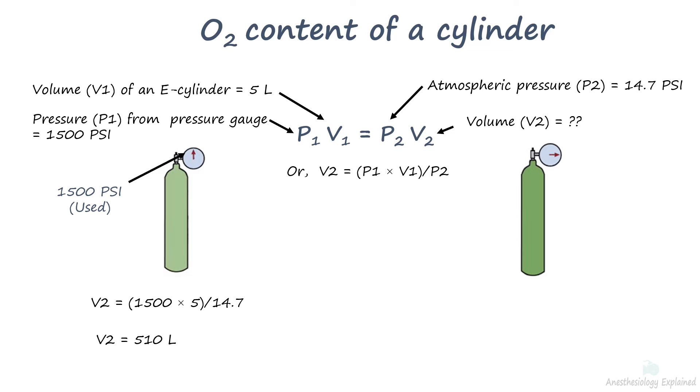There is a linear reduction of the oxygen volume as a full type E oxygen cylinder at a surface pressure of 1900 to 2000 psi contains 660 to 690 liters of oxygen.